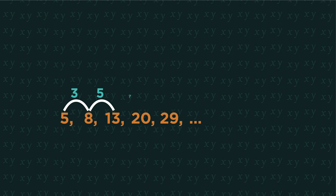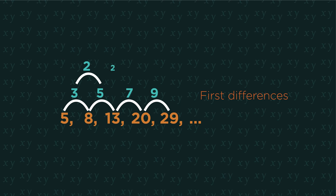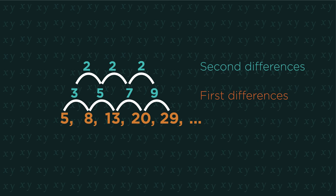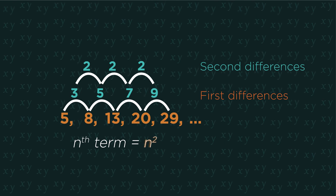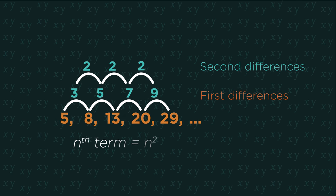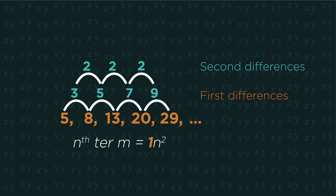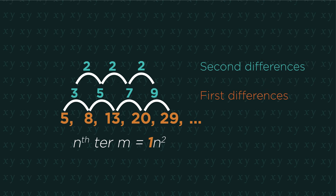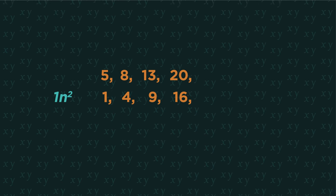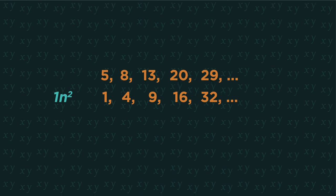We have this sequence. Find the first and second differences. There's a constant second difference, so it's going to be n squared. Because the second difference is 2, it will be 1 n squared. Always half the second difference. Now write out the original sequence and the 1 n squared underneath it.